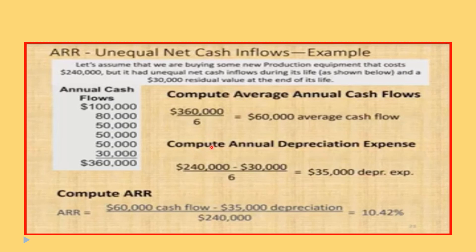It does not really matter in this question whether you have unequal cash flows or equal cash flows — the method is the same. Here we have an example: let's assume we are buying new production equipment that costs 240,000, but it had unequal net cash flows during its life as shown. There is also a 30,000 residual value at the end of its life.